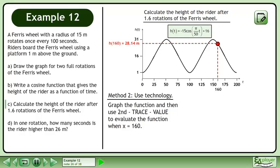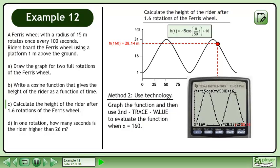Graph the function and then use 2nd trace value to evaluate the function when X equals 160. This gives us a height of 28.14 meters, which is the same result we obtained in method 1.